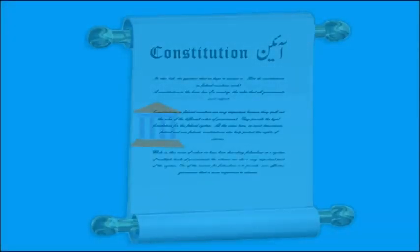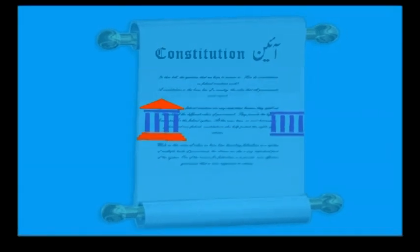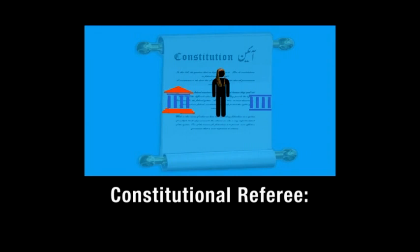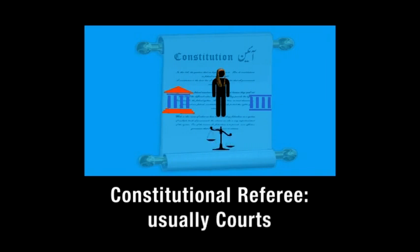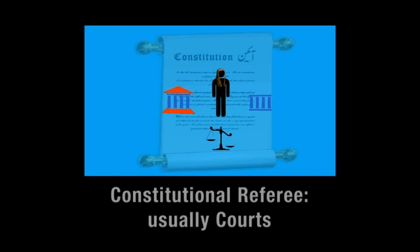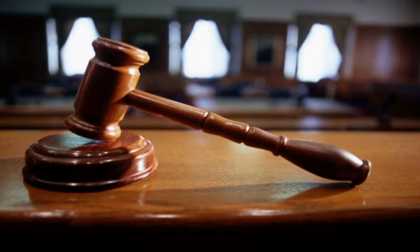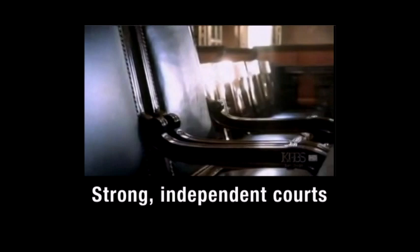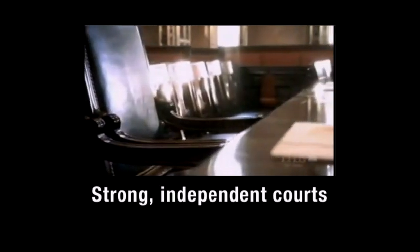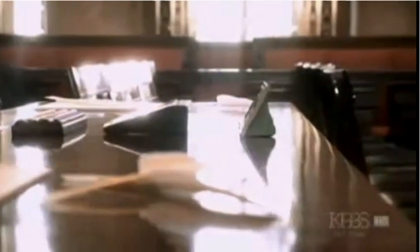Together with a constitution that defines roles and rights, federal countries almost always have a constitutional arbiter or referee. Its job is to interpret the constitution and settle conflicts and disagreements between orders of government. In most federations, that referee role is played by the courts. A strong, independent system of courts and judges is necessary for the rule of law, especially in federal countries, and most federations give the power to resolve constitutional disputes to the courts.